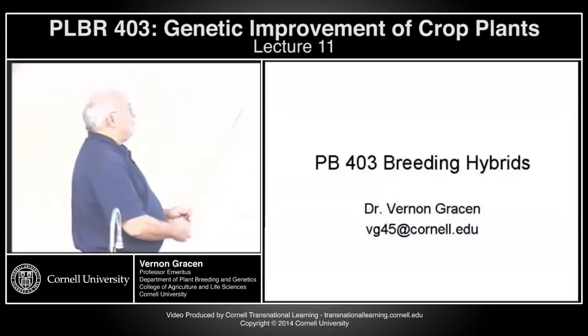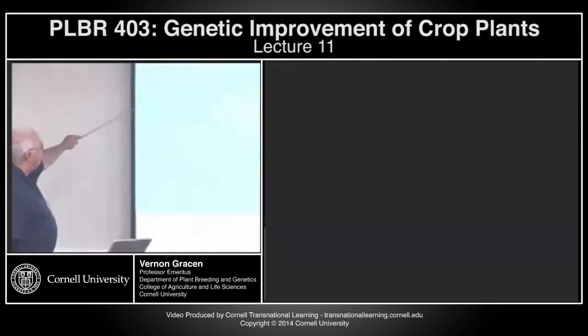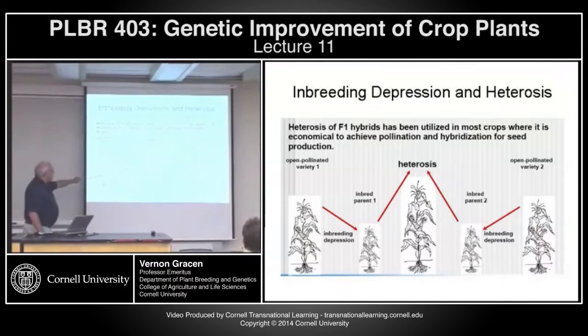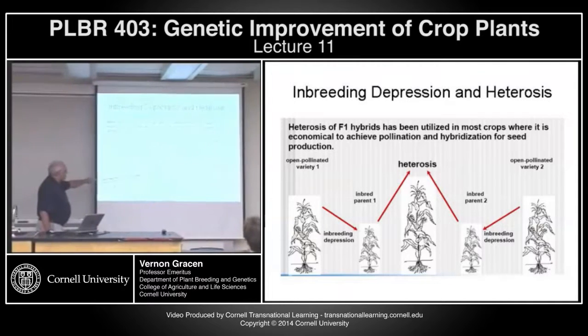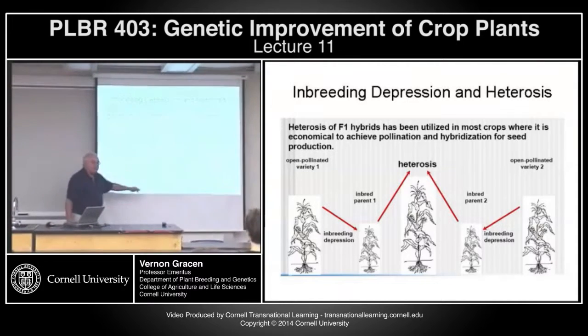So this review, you've seen this before: inbreeding depression, starting with open pollinated varieties, going down to inbred parents to get heterosis.